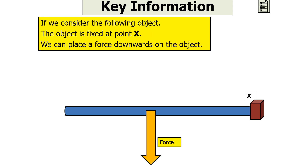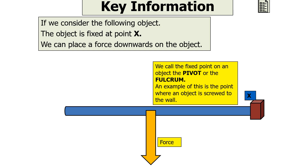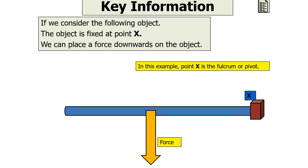If we consider the following object, the object is fixed at point X. We can place a force downwards on the object. Remember to always draw the force of the weight from the centre of mass of the object in free body diagrams. We call the fixed point on an object the pivot or the fulcrum — an example is the point where an object is screwed into a wall. So in this example, point X is the fulcrum or the pivot.